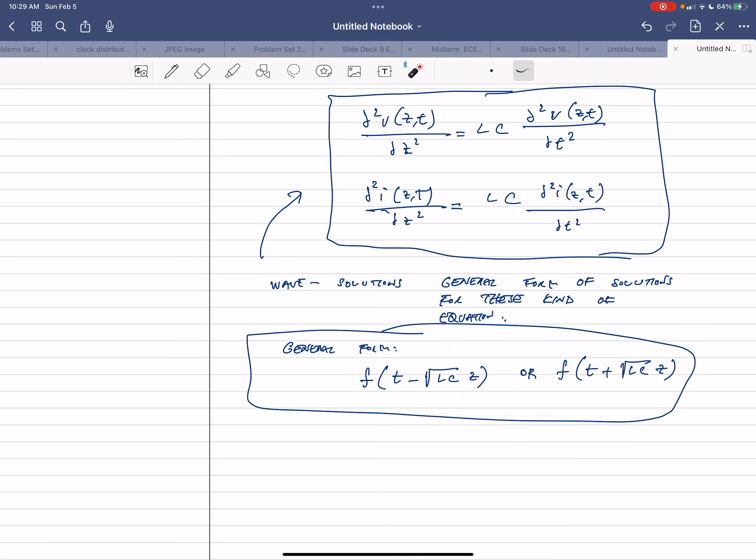By this means that this f could be kind of pretty much anything. It could be a cosine, it could be a sine, it could be some really complicated form, this function.